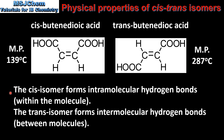This is because the cis isomer forms intramolecular hydrogen bonds — those are hydrogen bonds within the molecule — whereas the trans isomer forms intermolecular hydrogen bonds, which are hydrogen bonds between molecules. Therefore the trans isomer has the higher melting point.